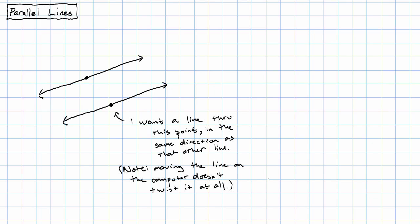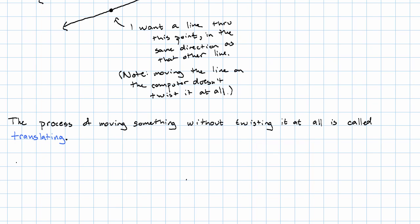That process of moving something without twisting it at all is called translating. And when we translate a line, we get a line that's in the same direction.